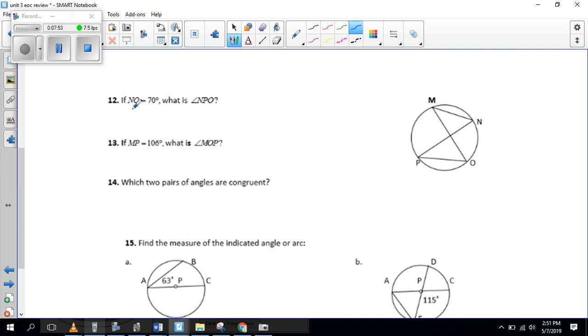This one, it just tells you, I'm going to give you 12. So it says if NO is 70, it says what is angle NPO? So NPO, let's find that NPO. So you see how that 70 opens up to that angle? So this angle here is our inscribed angle.